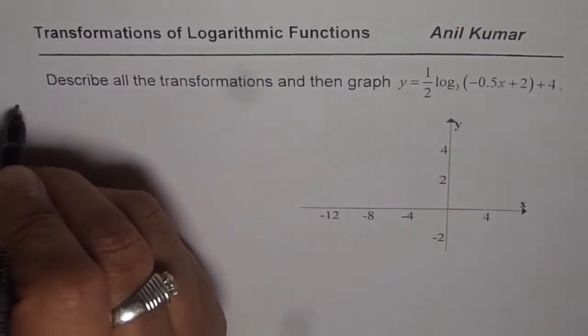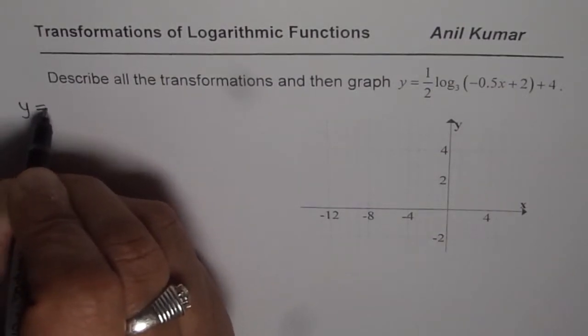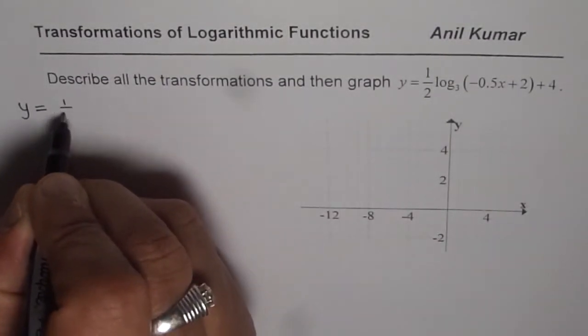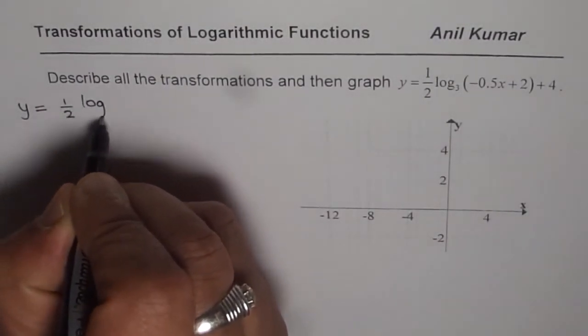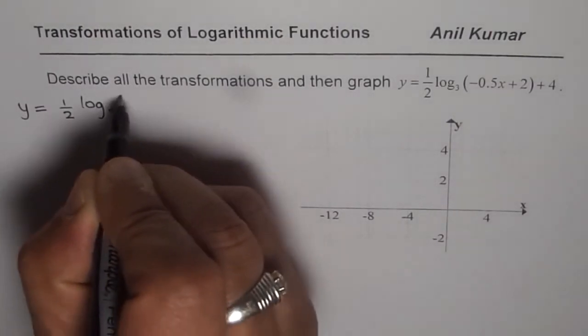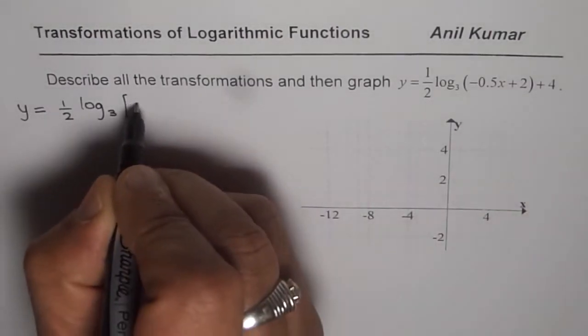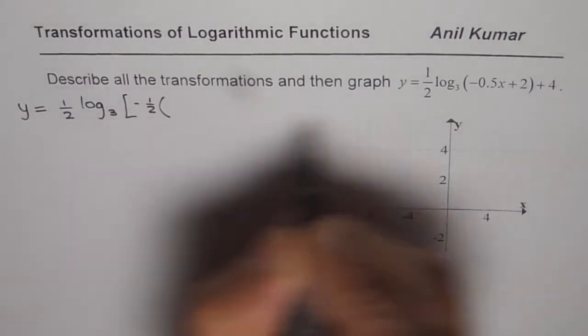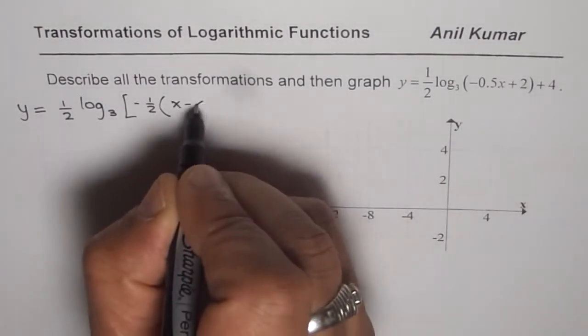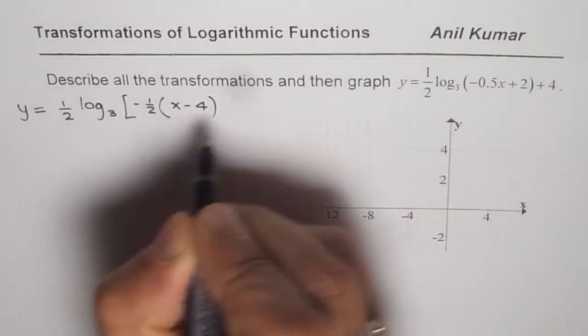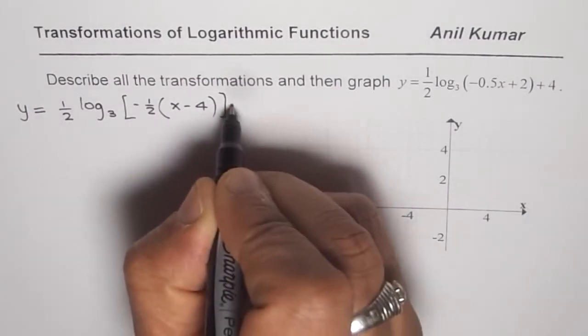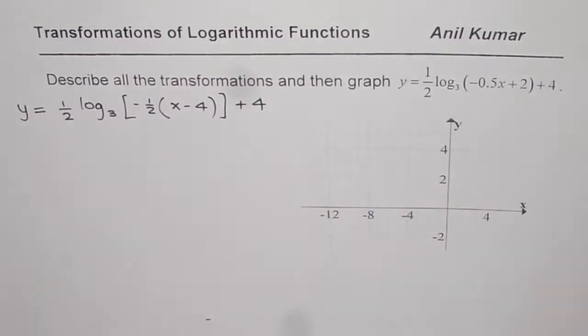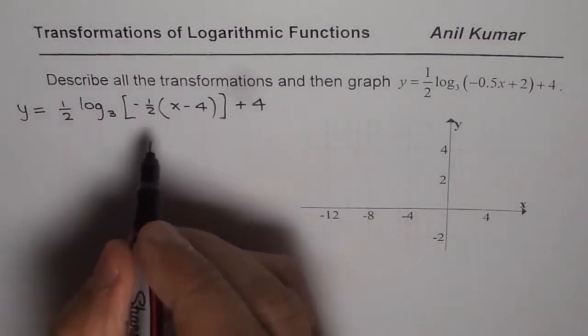So let us rewrite this function in the correct way so that we can easily identify the transformations. It is given to us as half of log to the base 3. Factor out minus half, then we get x minus 4. 2 divided by minus half plus 4.